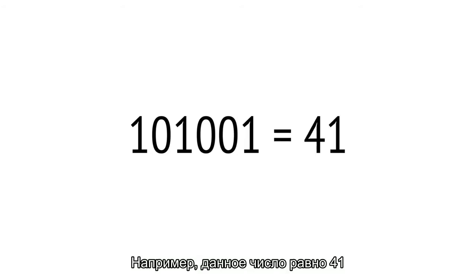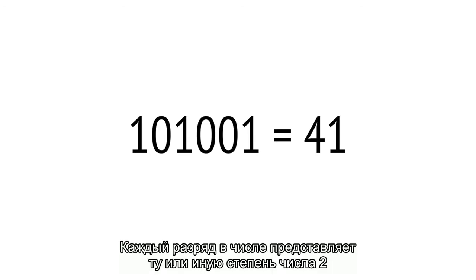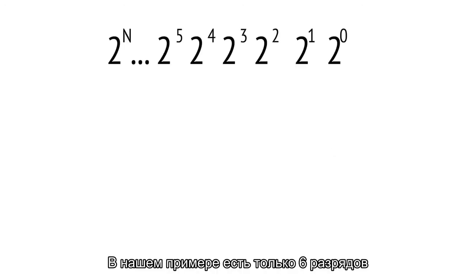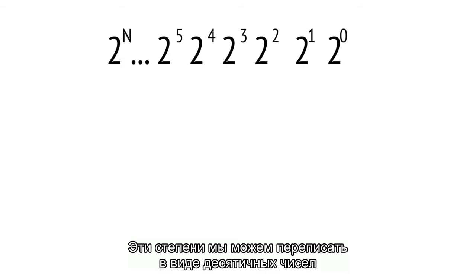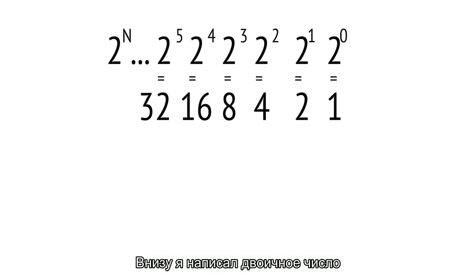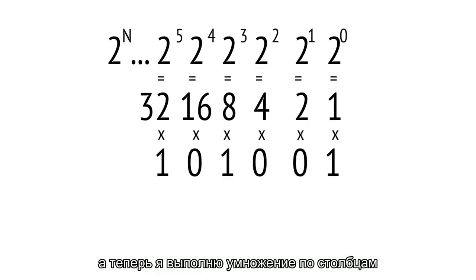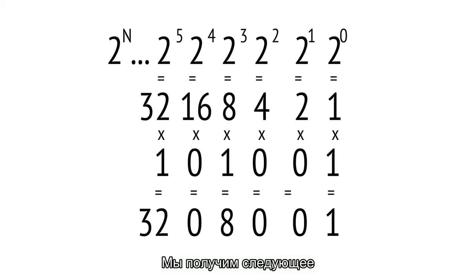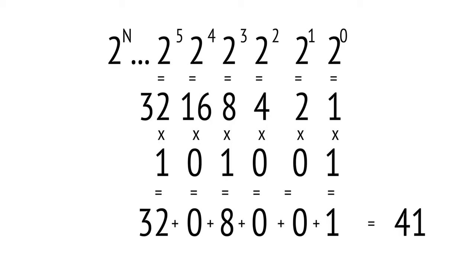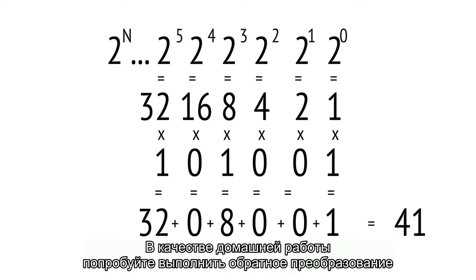Because we live in a decimal world, it is not easy to read binary numbers. For example, a certain binary number is equal to 41. How do we get this? Each digit in the binary number represents a power of 2. Our example contains six digits; we rewrite those powers to decimal numbers, multiply each digit by its corresponding power of 2, and sum all the numbers together to get 41.